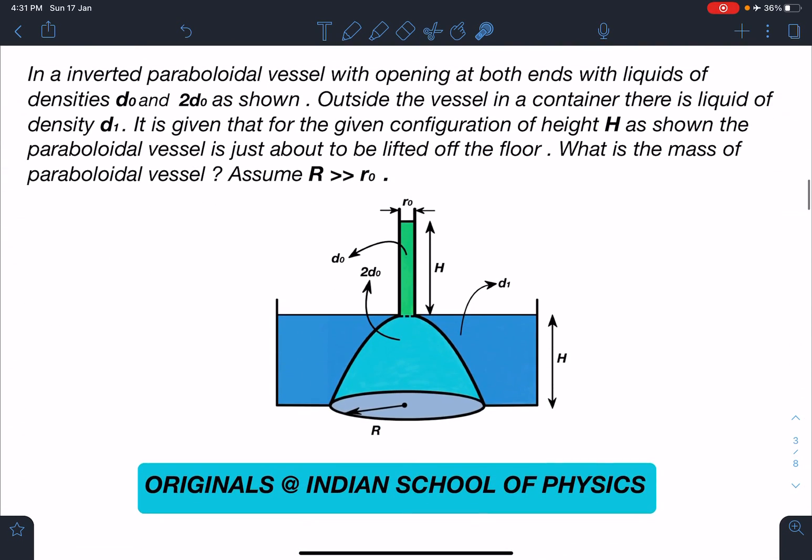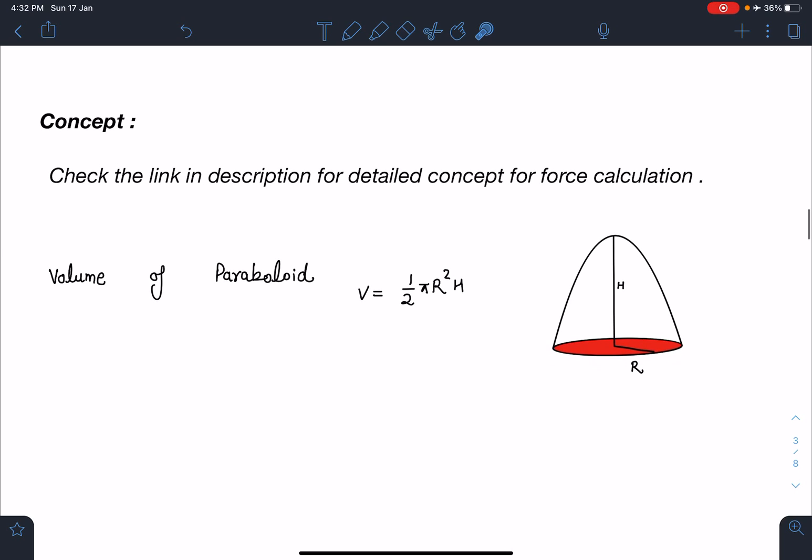Here is the statement of this problem: In an inverted paraboloidal vessel with opening at both ends with liquids of densities d0 and 2d0 as shown, outside the vessel in a container there is liquid of density d1. It is given that for the given configuration of height H as shown, the paraboloidal vessel is just about to be lifted off the floor. What is the mass of the paraboloidal vessel? Assume this tube is of negligible cross-section area compared to the paraboloid available here.